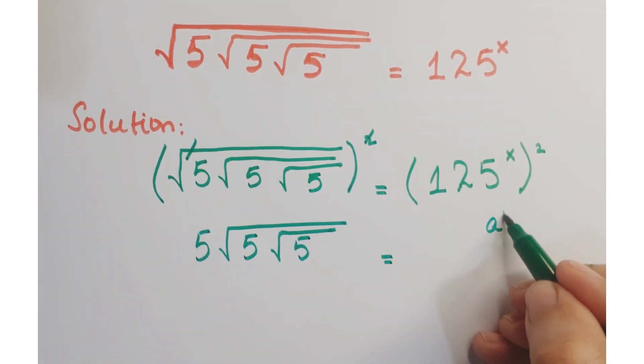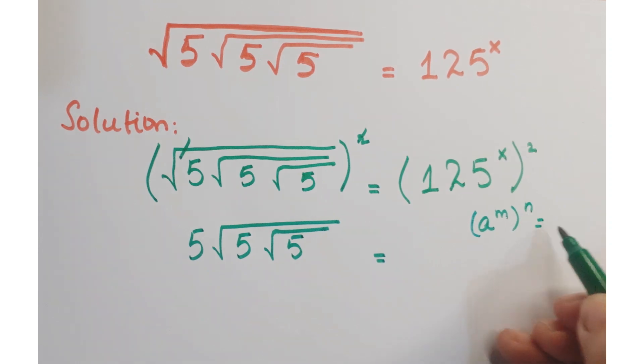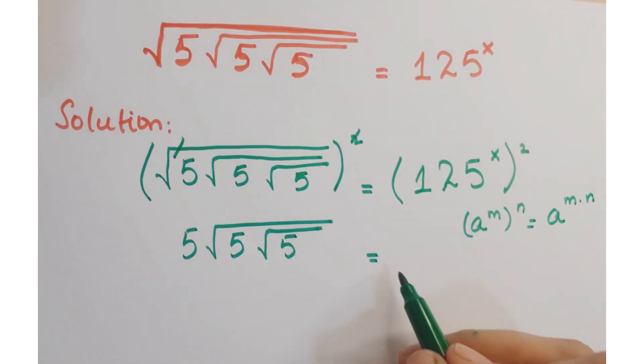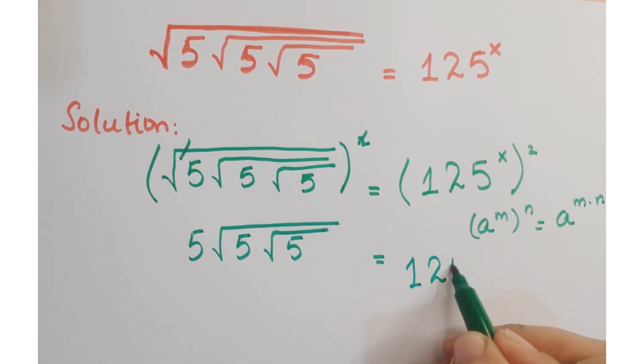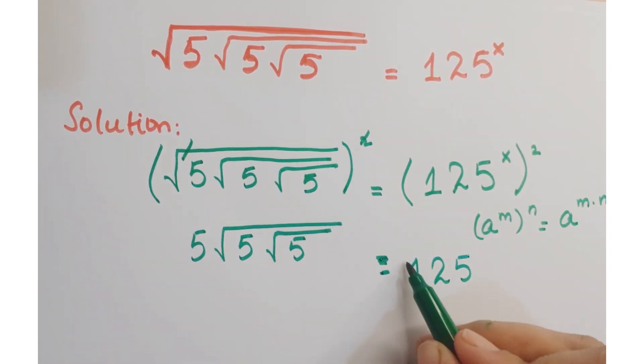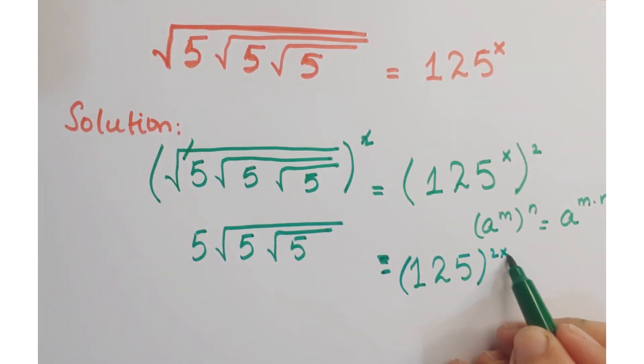As you know that a to the power m whole to the power n can be written as a to the power m into n. So you can write this as 125 whole to the power 2x.